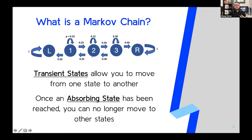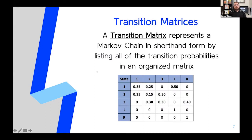Most Markov chains are a lot more complicated than this one, so instead of drawing a diagram, we use something called a transition matrix — a matrix that represents a Markov chain by putting together all of the different transition probabilities between states. In a typical transition matrix, all of the rows represent the state you are currently in, and all of the columns represent the state you are going to. Notice how we have all our transient states on the left and top, and our absorbing states on the right and bottom.